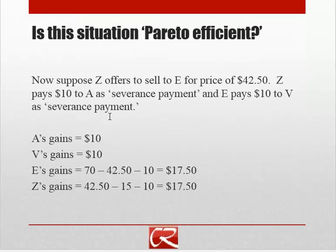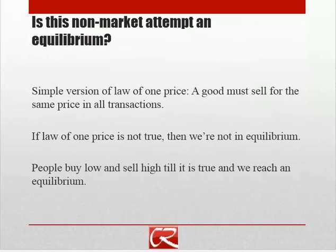Clearly, every one of these people is better off than they were in the forced matchmaking equilibrium — and it isn't actually an equilibrium. Any situation where we have a violation of the law of one price is probably not going to be an equilibrium. The law of one price is the idea that a good must sell for the same price in all transactions, because if it's not, sellers getting a low price will seek higher-paying buyers, and buyers paying high prices will shop around for lower prices.